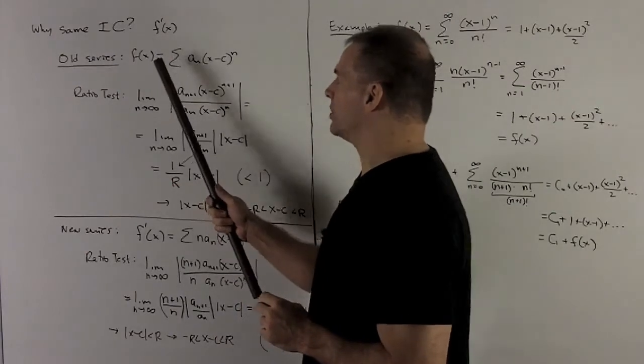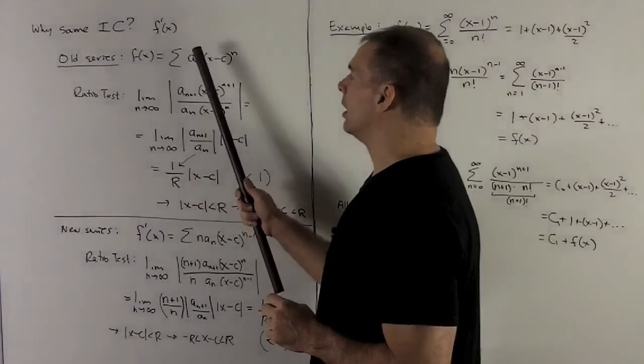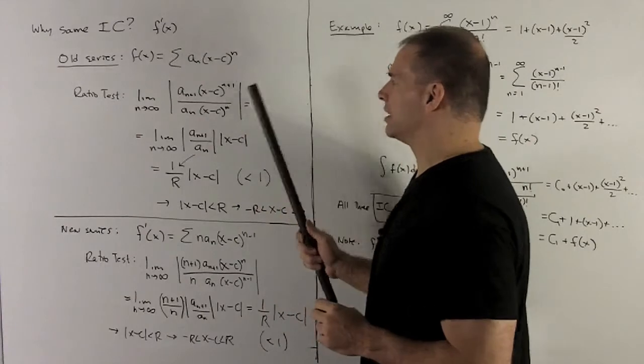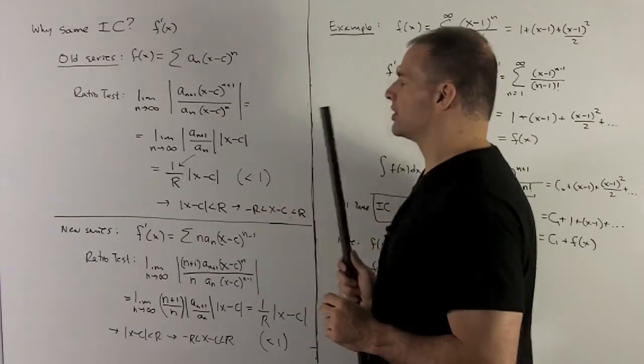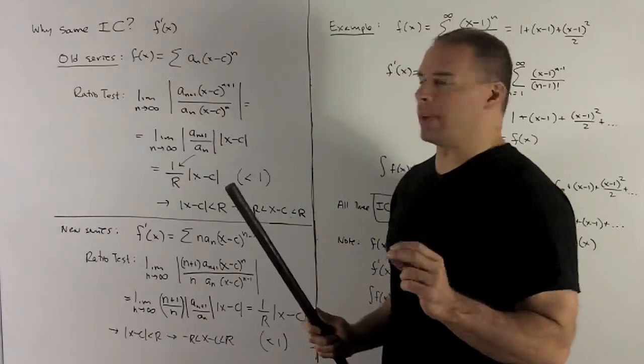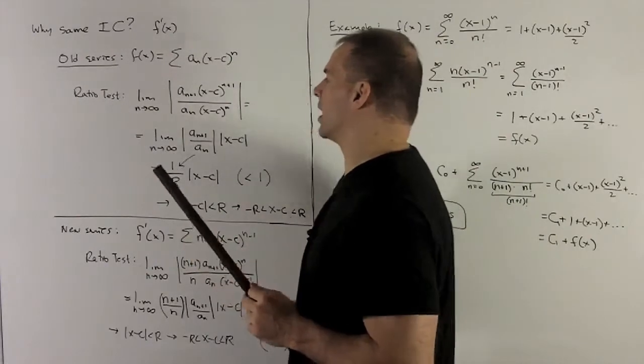Let me suppose I have my series f(x) equal to the sum of a_n(x-c)^n, so we're going to be centered at c.